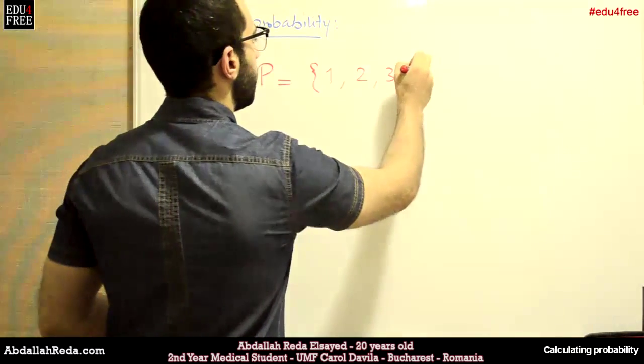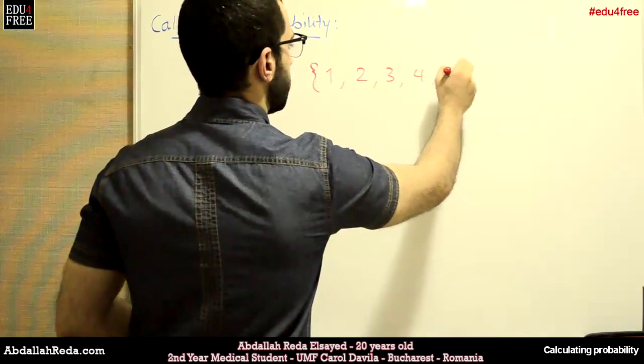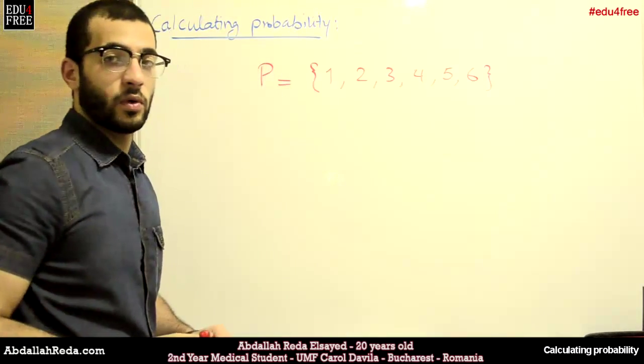These are our possibilities, one of these numbers to appear if the dice was thrown once.